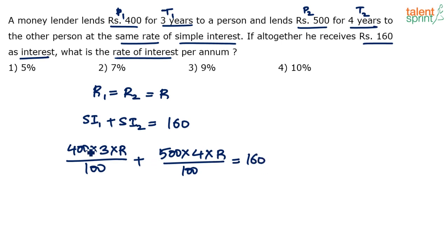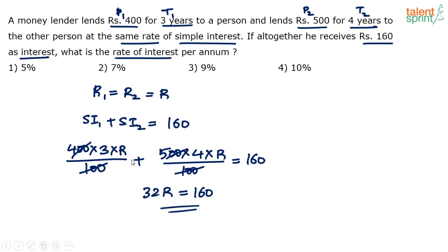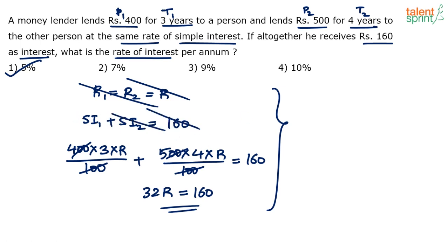The zeros cancel out. 400×3 gives 12, and 500×4 gives 20 — so 12r plus 20r equals 32r. Therefore 32r equals 160, which gives r equals 160 divided by 32, which is 5%. Option 1 is the answer. You can do this mentally — just put the equation directly and simplify to get the answer.